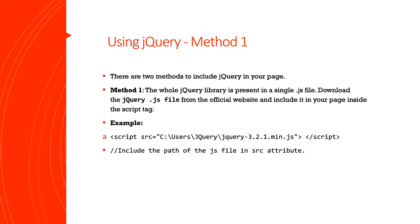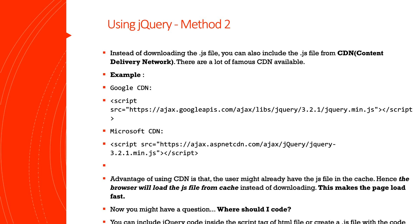The whole jQuery library is present in a single .js file. That file is jQuery 3.2.1 min.js. Method 1 is local and Method 2 is online. The advantage of the online method is that browser loading is faster because the browser caches the CDN-hosted file.